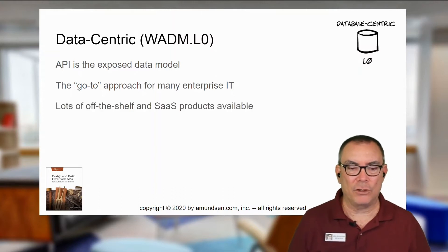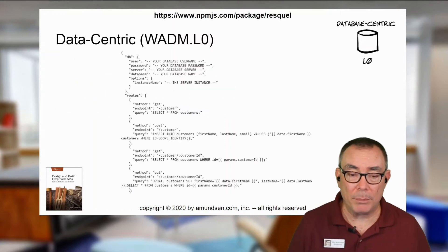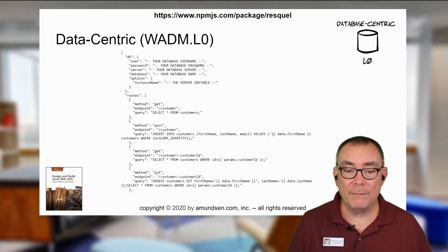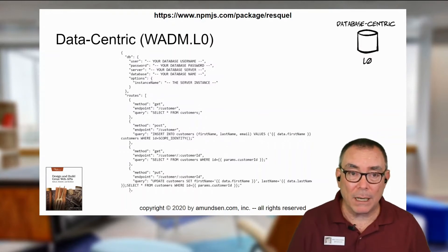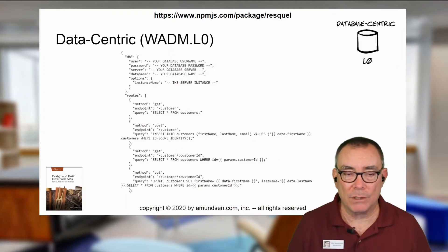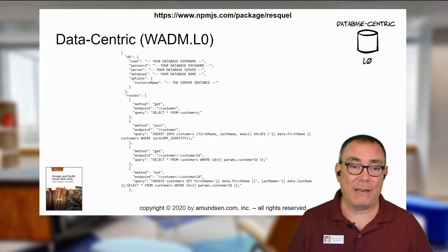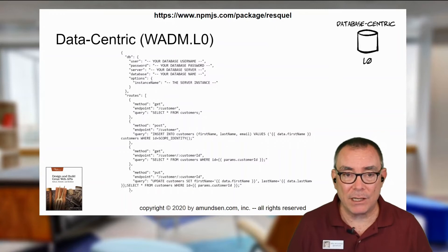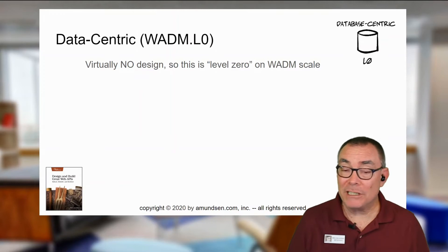As a matter of fact, there are lots and lots of tools — lots of off-the-shelf and software-as-a-service products that are basically based on this idea of just give me a data model and I'll give you an API. There are lots of ways to model this. This is an example of literally modeling a SQL database set of queries, turning them into routes, and then just running the query based on which route somebody picks. GraphQL is a much more sophisticated version of that. Falcor is another example of these data-centric ways of modeling your interface.